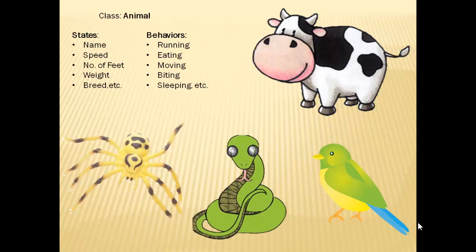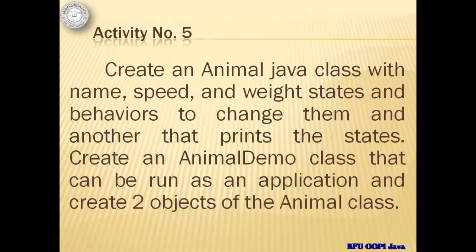In object-oriented principles, we can say that the cow is an instance of the class of objects known as Animal. In relation to that, activity number five commands us to create an Animal Java class with name, speed, and weight states, and behaviors to change them, and another that prints the states.